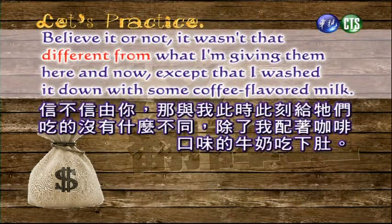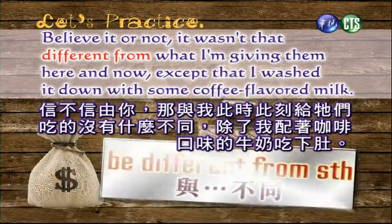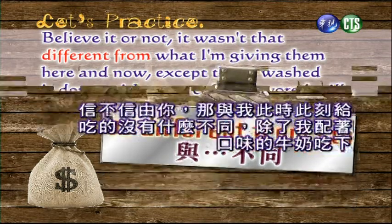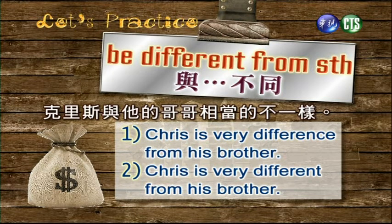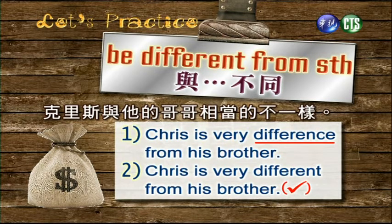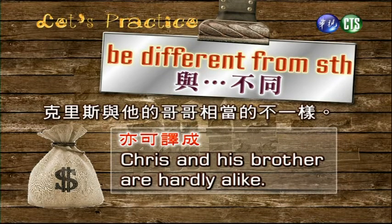好，下面。Believe it or not, it wasn't that different from what I'm giving them here and now, except that I washed it down with some coffee flavored milk. 信不信由你，那与我此时此刻给他们吃的没什么不同，除了我配着咖啡口味的牛奶吞下肚。我们要学be different from something与什么不同。克里斯与他的哥哥相当的不一样。Chris is very different from his brother. You need an adjective here, not a noun, so the second one's right. 要形容词是different，difference是名词不对。好，我们看另外的翻法：Chris and his brother are hardly alike. 几乎不相像，hardly几乎不的意思。